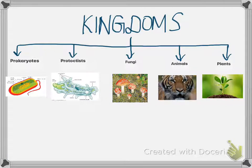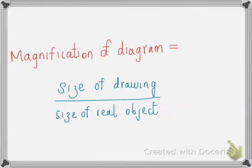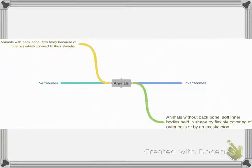There are five kingdoms: prokaryotes, protoctists, fungi, animals, and plants. In this topic you also need to learn one formula: magnification of a diagram equals the size of the drawing divided by the size of the real object.